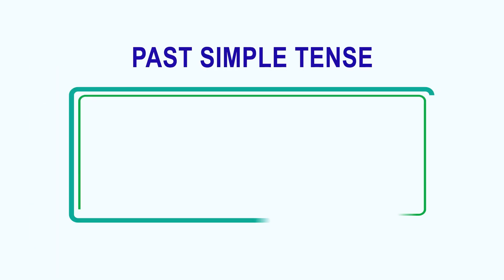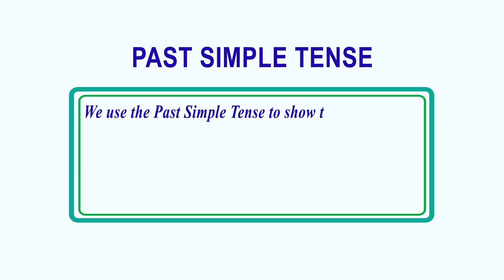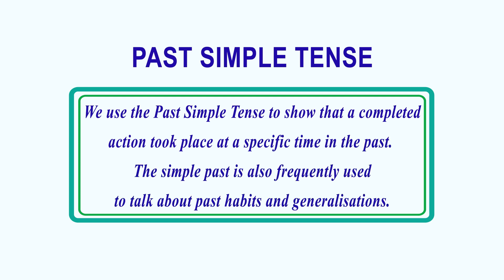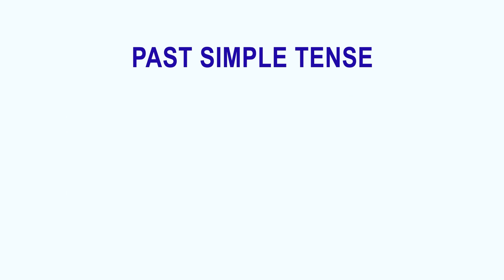We use the past simple tense to show that a completed action took place at a specific time in the past. The simple past is also frequently used to talk about past habits and generalisations. You should think about the past simple tense when you meet the following words.